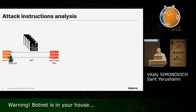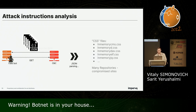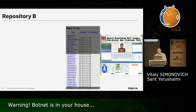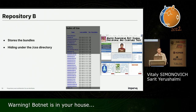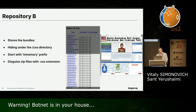After we saw this, we automated the process and fetched as many attack instructions as possible. We parsed them and found multiple CSS files, which are actually zip files — we're calling them bundles. We discovered more than 70 repositories, which are basically all hacked websites. From now on, we'll call the location of the CSS files Repository B. Here is an example of one repository — a legitimate educational website located in Indonesia. It stores many bundles under the CSS path alongside other legitimate CSS files, all sharing the same prefix: 'in-memory'.